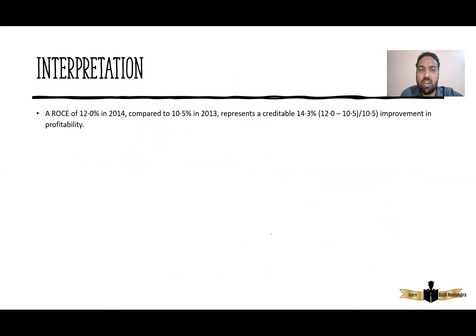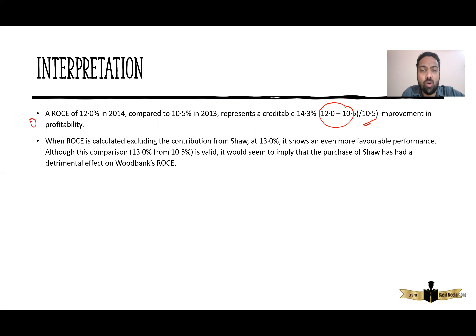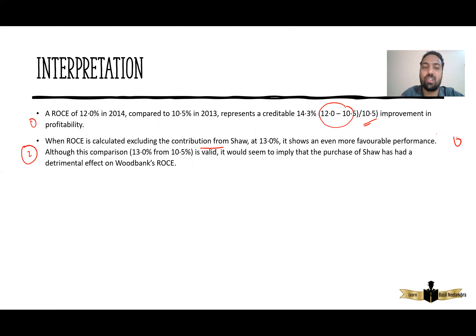How do you word that in your answer? An ROCE of 12% in 2014 compared to 10.5% in 2013 represents a creditable increase — that is 12 minus 10.5, taking previous year as base: 14.3%. But basically zero marks for that. When ROCE is calculated excluding contribution from Shaw — that is our step number two — it becomes 13%, showing even more favorable performance. Still zero marks by itself.